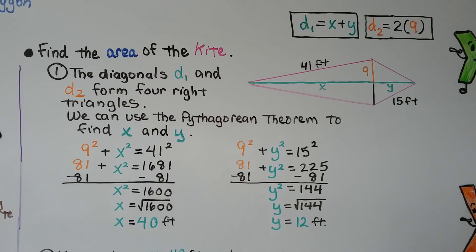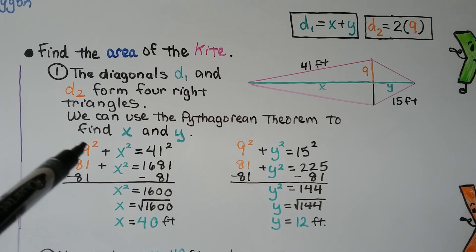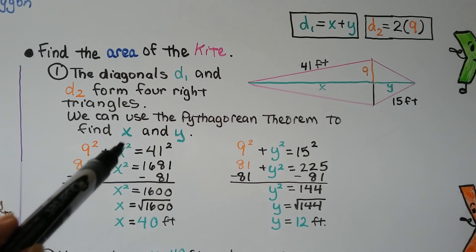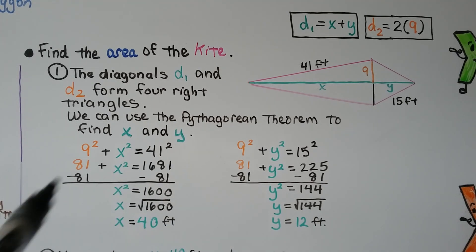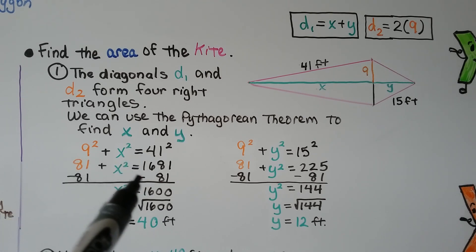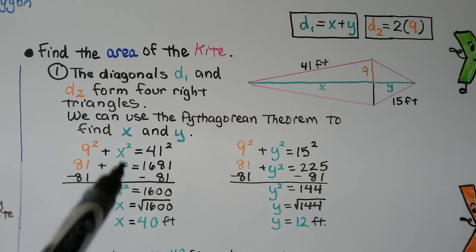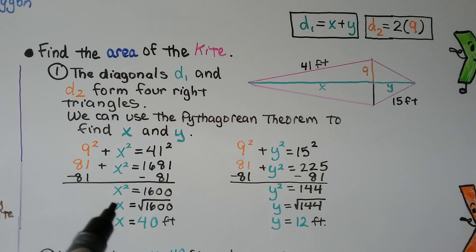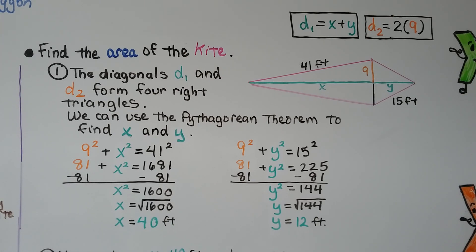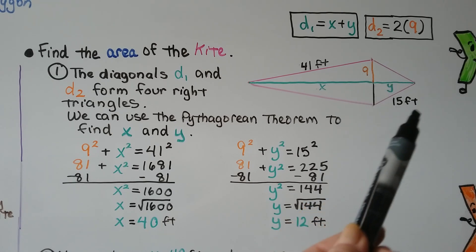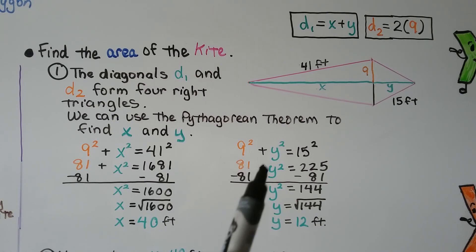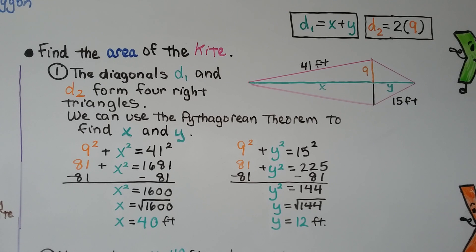Using a squared plus b squared equals c squared: 9 squared plus x squared equals 41 squared, which gives 81 plus x squared equals 1681. Subtracting 81 from both sides, x squared equals 1600, so x equals 40 feet. For y: 9 squared plus y squared equals 15 squared, giving 81 plus y squared equals 225. Subtracting 81, y squared equals 144, so y equals 12 feet.